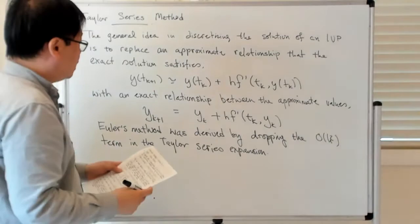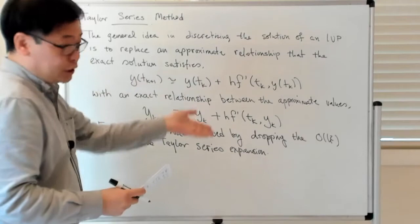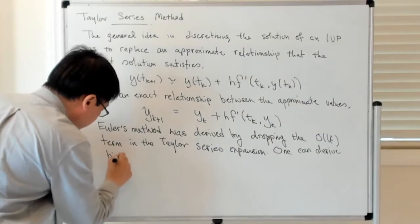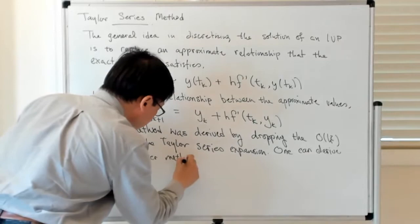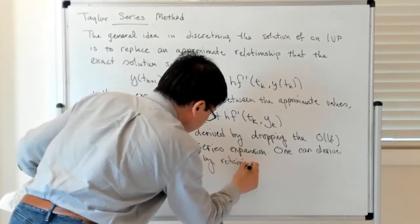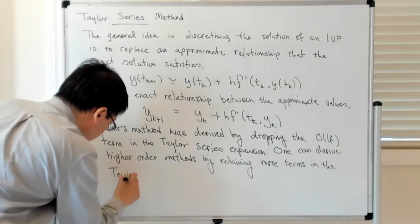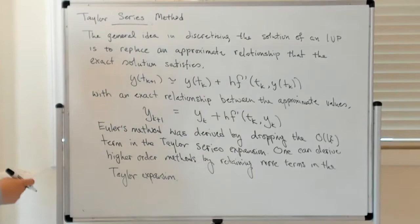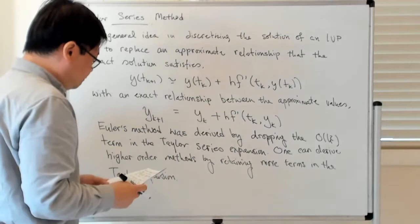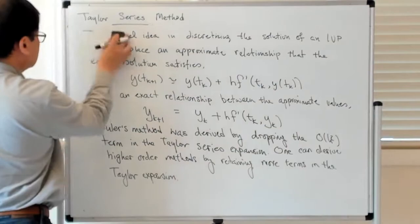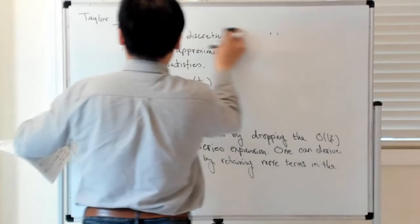The point is that one can derive higher order methods than just the Euler method, which is a first order accurate method, by retaining more terms in the Taylor expansion. Let's see how to go about doing this and some of the subtleties which arise. Let's illustrate this by taking one additional term in the Taylor expansion.